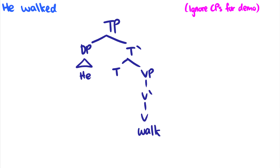Here are some very basic sentences just to show you what happens in T. I'm not going to draw the CPs for these because I want the focus to be on the TPs themselves. So we have a sentence like 'he walked,' which is a past tense sentence. How do we get that information in our trees? Well, the original assumption was that we put morphology in T, and what would happen is there would be movement from T down to the verb.